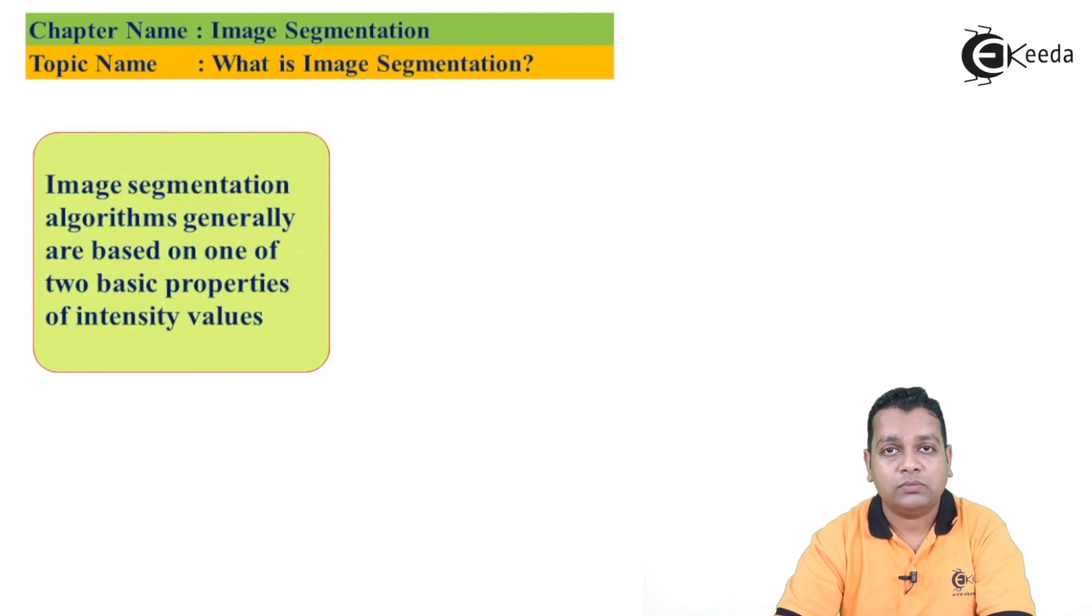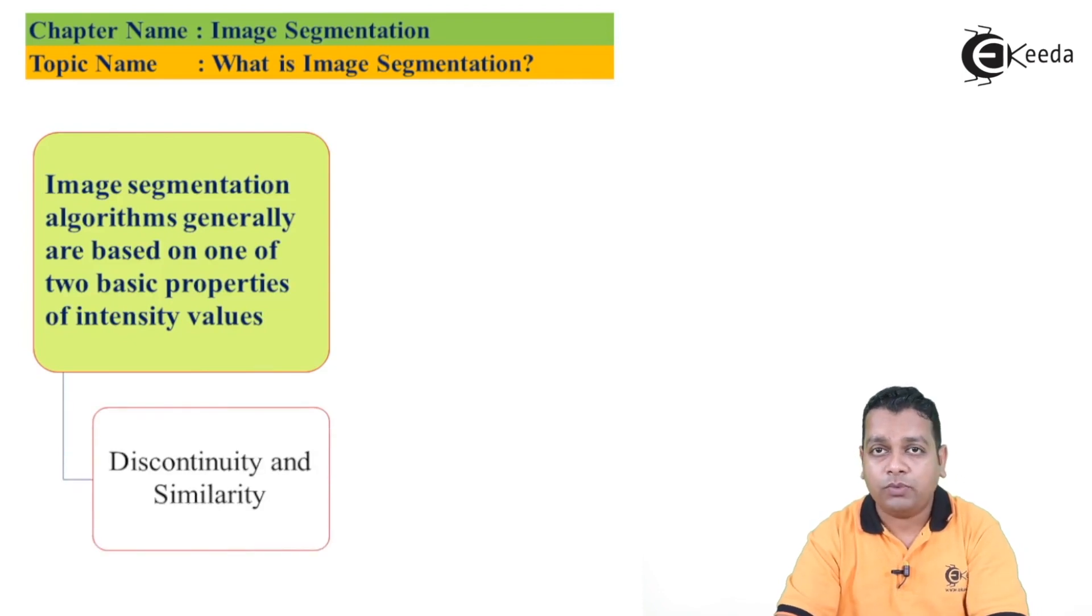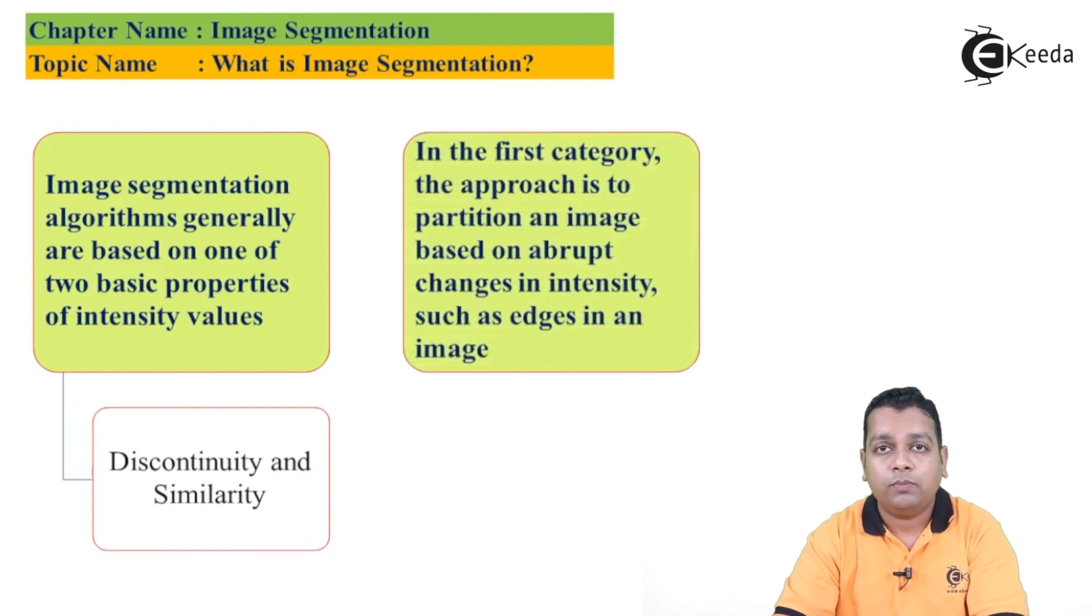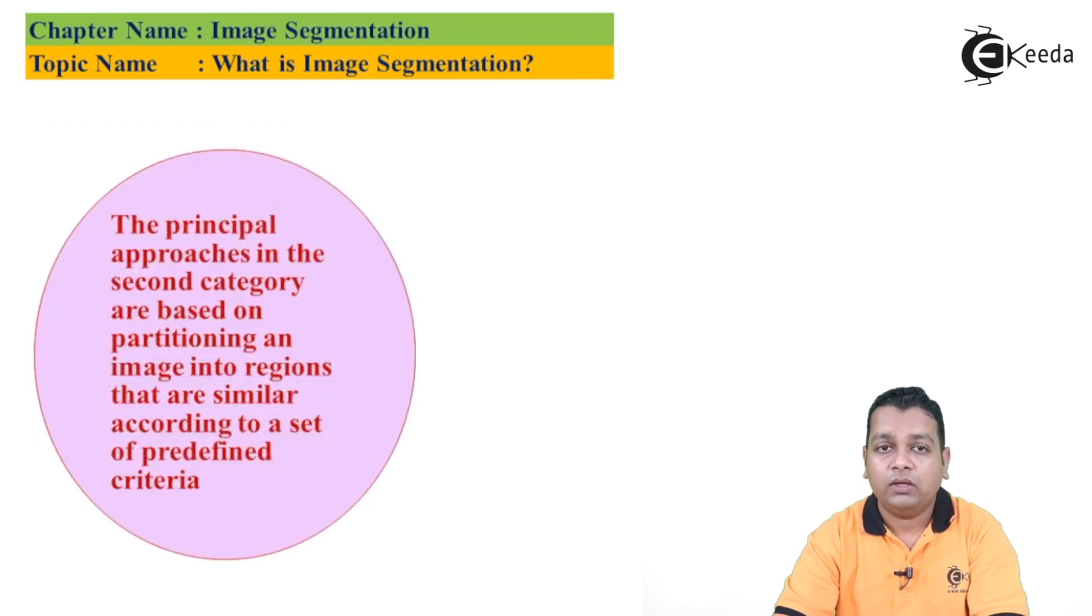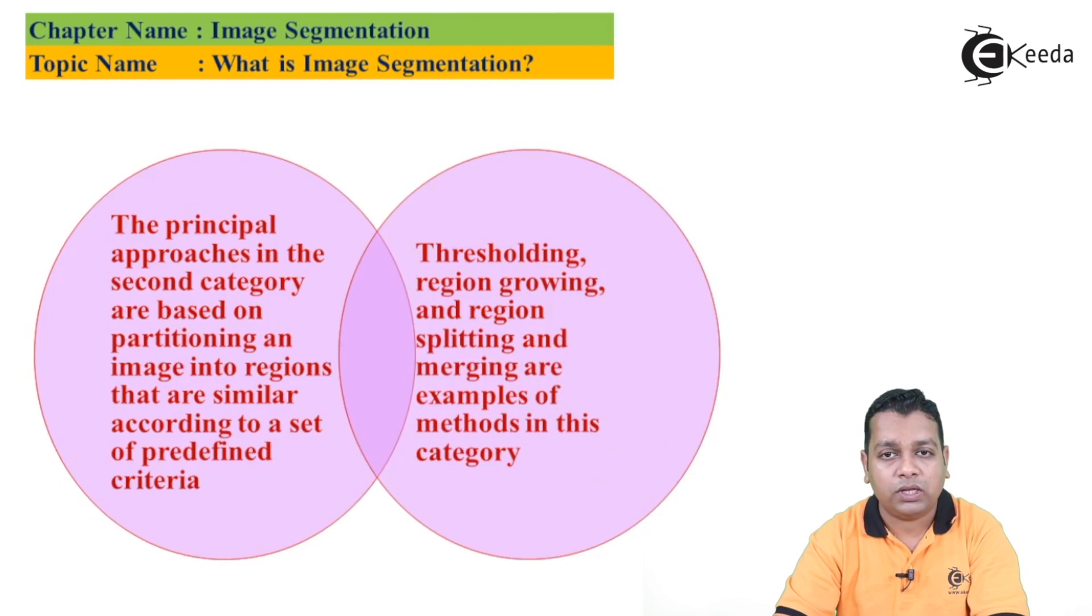Image segmentation algorithms actually are based on one of the two basic properties of the intensity values. So in case of the binary images, the intensity values are the only two. In the grayscale images, if you take for example the 8-bit environment, you can have the gray intensity levels, gray levels right from 0 to 255. So here the two basic properties with respect to the intensity levels are: discontinuity and similarity. In the first category that is discontinuity, the approach is actually to partition an image based on the abrupt changes in the intensity level such as edges into the images. The principal approaches in the second category are based on partitioning an image into regions that are similar according to the set of predefined criteria. Thresholding, region growing, and region splitting and merging are the examples of the methods in the second category.